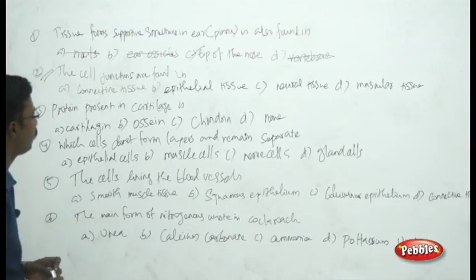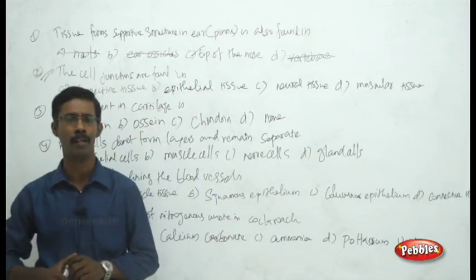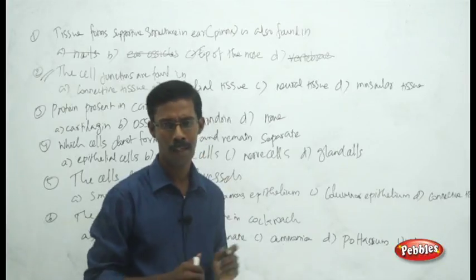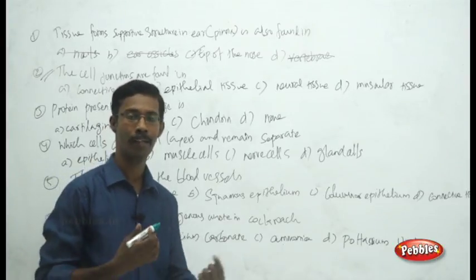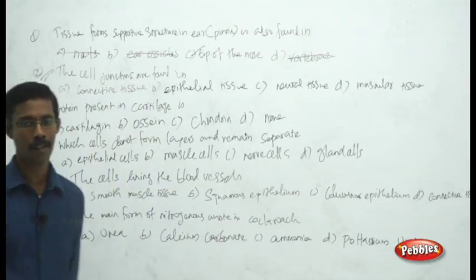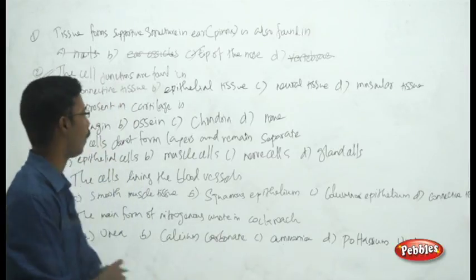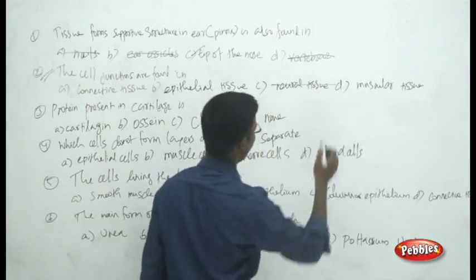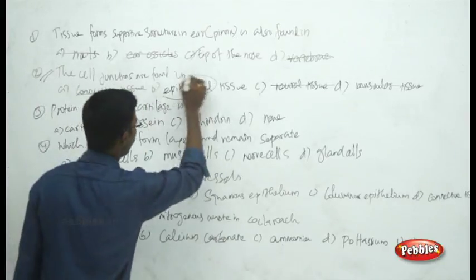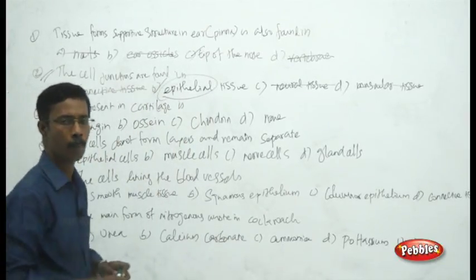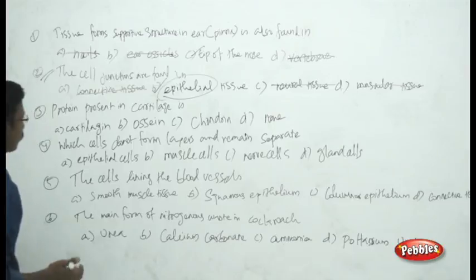Next question: cell junctions are found in which type of tissue? Cell junctions connect cells within a tissue. There are many types: tight junctions, adhering junctions, and gap junctions. You can eliminate neural tissue, where no such connections or junctions are visible. Muscular tissue and connective tissue can also be eliminated. The correct answer is epithelial tissue — all epithelial cells are interconnected by cell junctions.